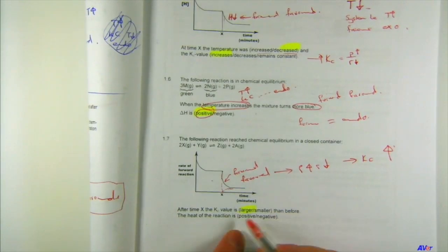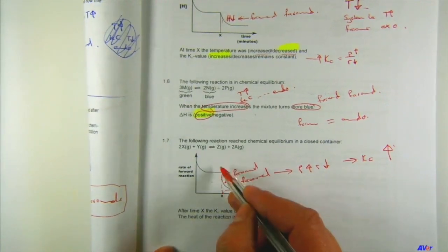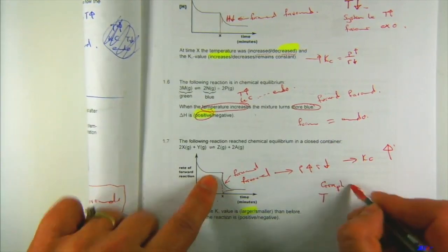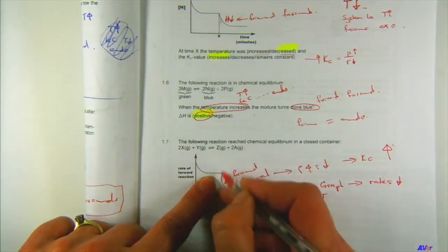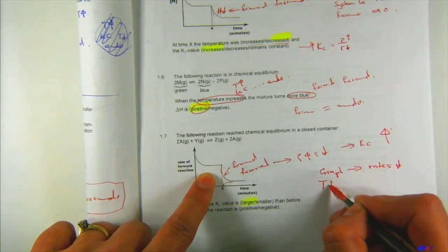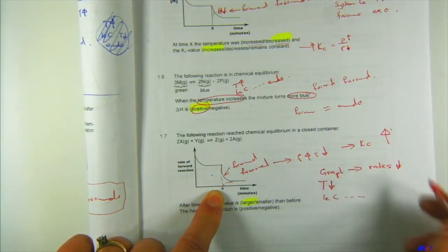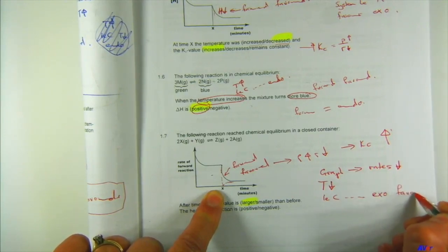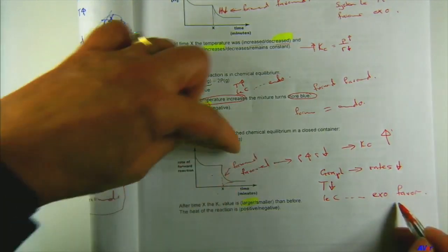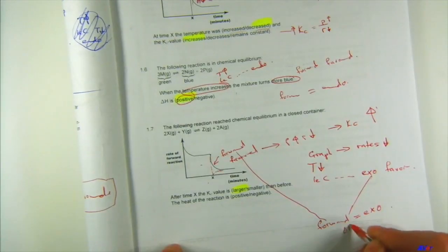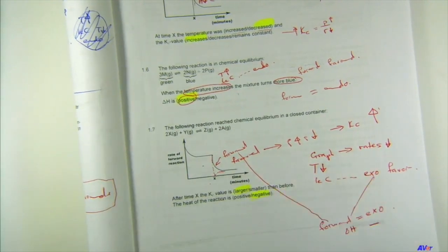Then they ask about delta H. The graph shows the rates of the reactions decrease — going down. Rates only go down if the temperature went down. If the temperature went down, Le Chatelier says the system tries to increase it by favoring the exothermic. From the graph we can see the forward is favored, so forward is actually exothermic — and therefore delta H is negative. These are really the difficult equilibrium questions — you have to work through multiple steps.